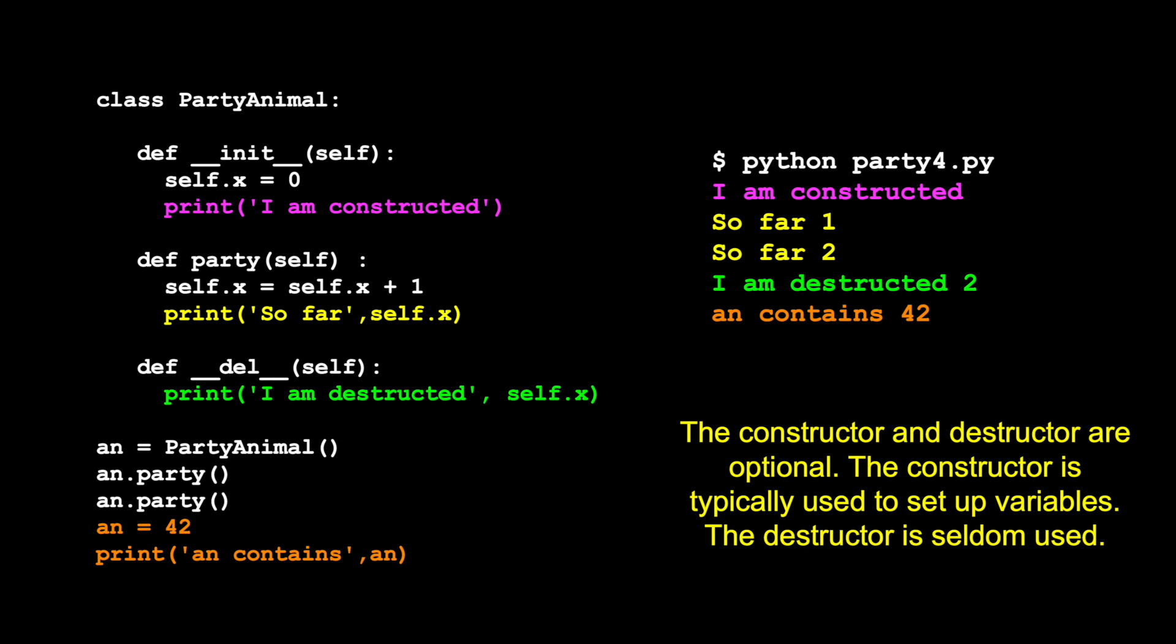So here's a bit of code that we've got. It's our party animal and a lot of it is the same as what we've been doing so far. We have this variable x and the constructor has a special name, __init__.